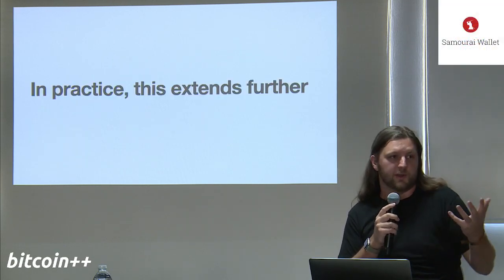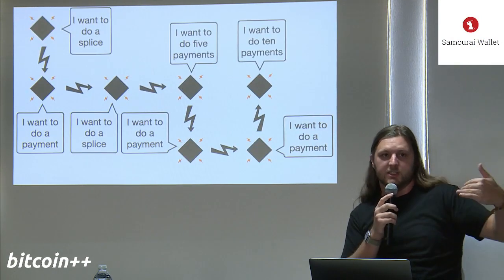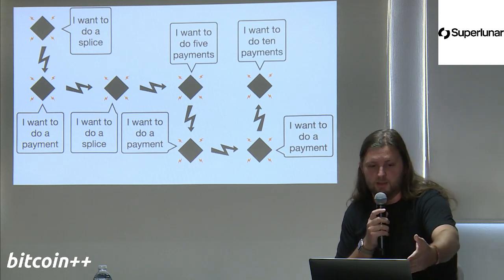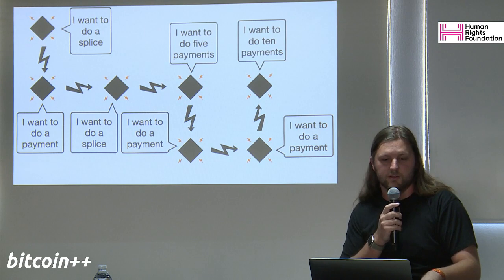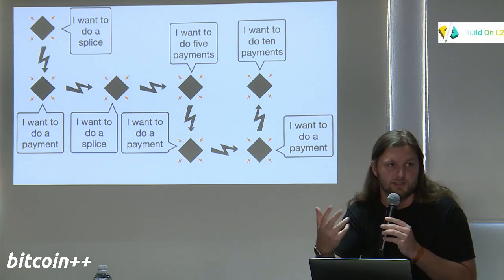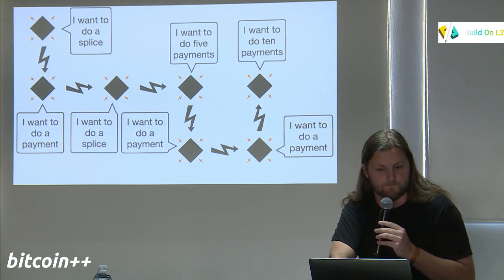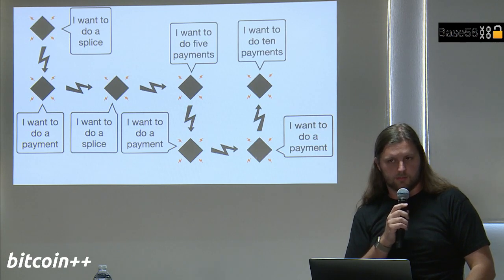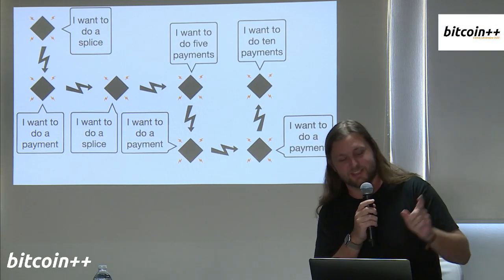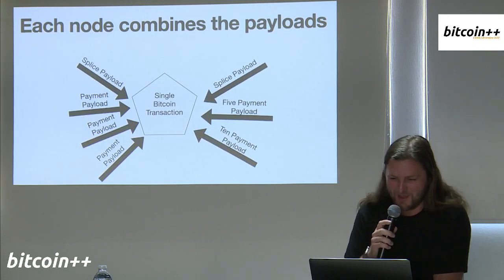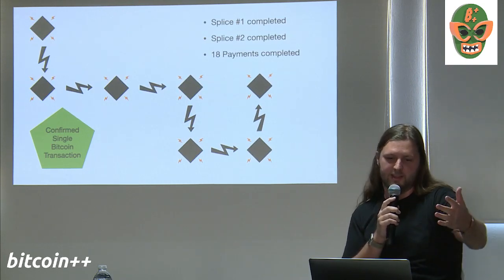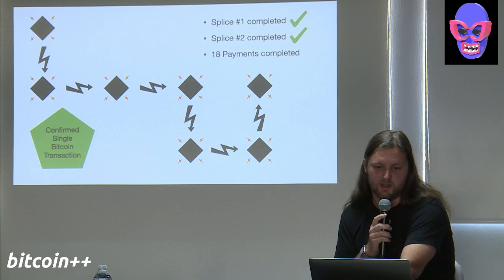In practice, this extends much further than just three examples — it can chain on for many, many peers. Here's an example with six peers: Chuck starts a splice, then invites other peers along their channels to do other things too. This is a purposely complicated example: two splices and a whole bunch of people trying to do payments, all trying to get done in a single collaborative transaction. All of these get combined into a single Bitcoin transaction, and the splices and payments all get confirmed together.